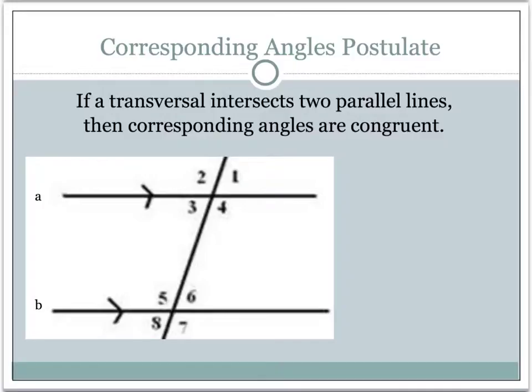The first thing we're going to talk about is what's called the corresponding angle postulate. This postulate states: if a transversal intersects two parallel lines, then corresponding angles are congruent. The if part of the statement tells us we have to be looking at parallel lines being cut by a transversal. Then if that happens, we know the corresponding angles are congruent.